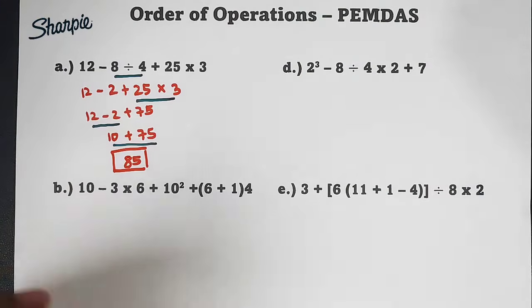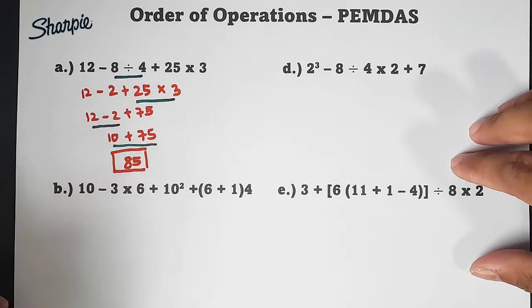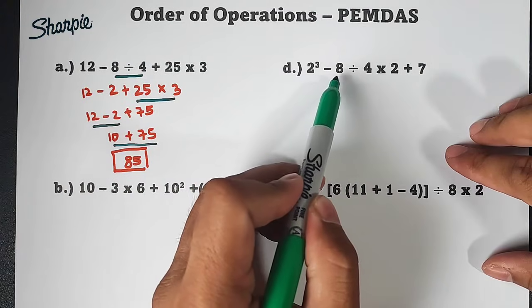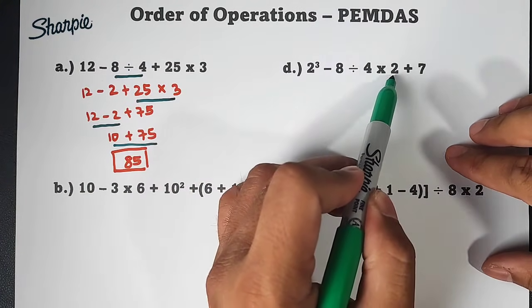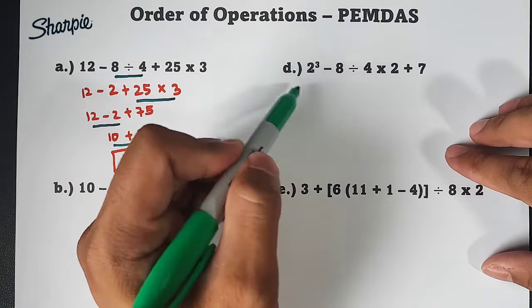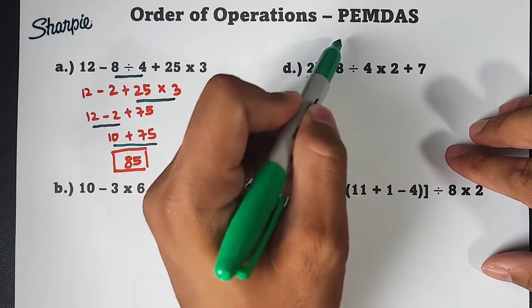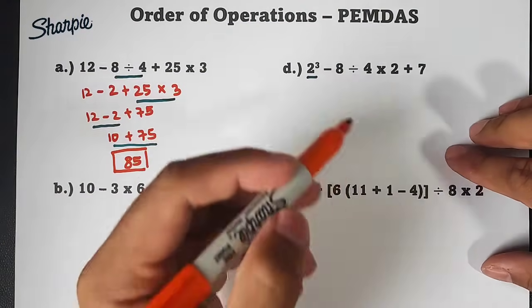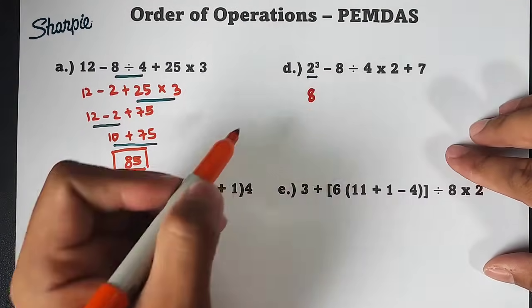In letter D, you'll notice we don't have letter C. We don't have letter C. Absent. Here, we have 2 cubed minus 8 divided by 4 times 2 plus 7. There's no doubt we should do 2 cubed first because it's an exponent. So our 2 cubed is equal to 8.